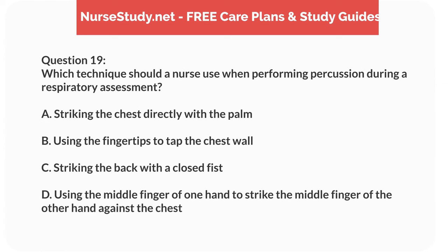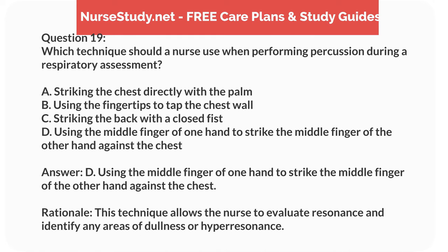Question 19. Which technique should a nurse use when performing percussion during a respiratory assessment? A. Striking the chest directly with the palm. B. Using the fingertips to tap the chest wall. C. Striking the back with a closed fist. D. Using the middle finger of one hand to strike the middle finger of the other hand against the chest. Answer: D. Using the middle finger of one hand to strike the middle finger of the other hand against the chest. Rationale: This technique allows the nurse to evaluate resonance and identify any areas of dullness or hyperresonance.